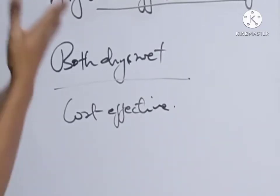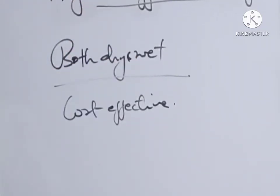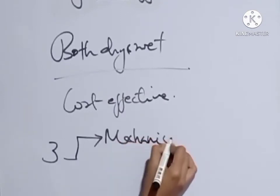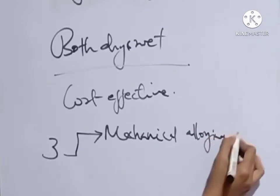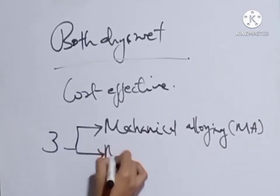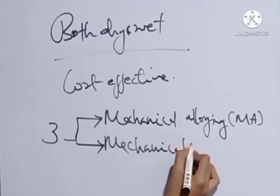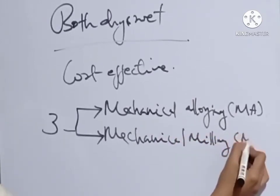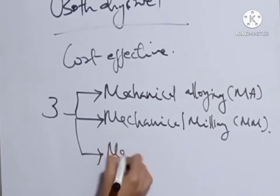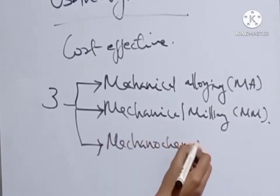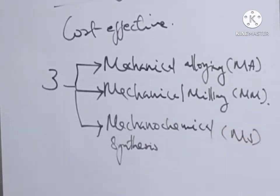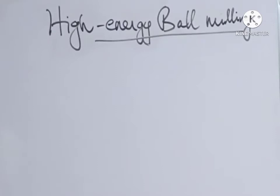If you look at the approaches used in high-energy ball milling method, three important approaches are there. The first one is mechanical alloying (MA), the second approach is mechanical milling (MM), and the third one is mechanochemical synthesis (MS).